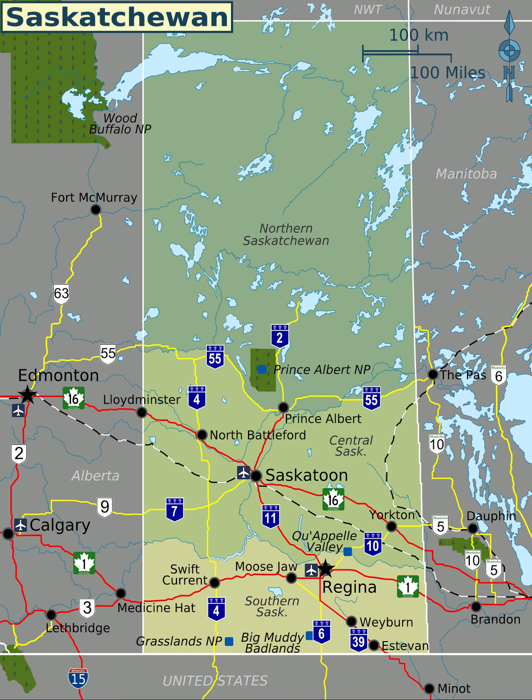Saskatchewan is part of the western provinces and is bounded on the west by Alberta, on the north by the Northwest Territories, on the northeast by Nunavut, on the east by Manitoba, and on the south by the U.S. states of Montana and North Dakota.